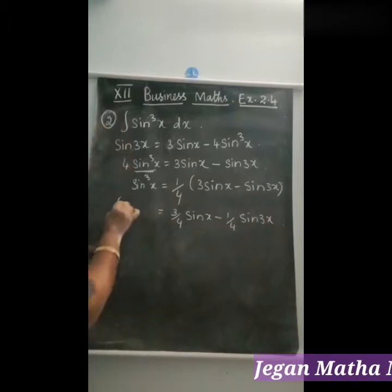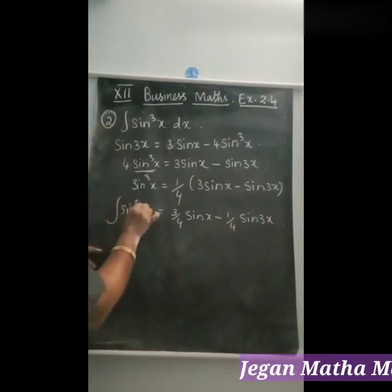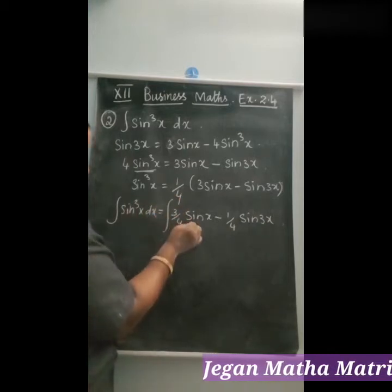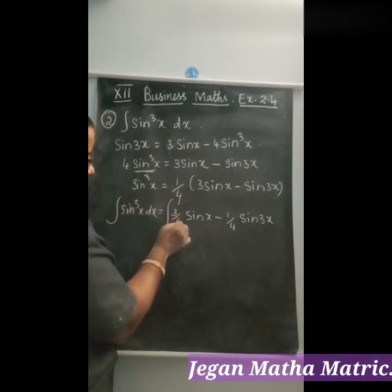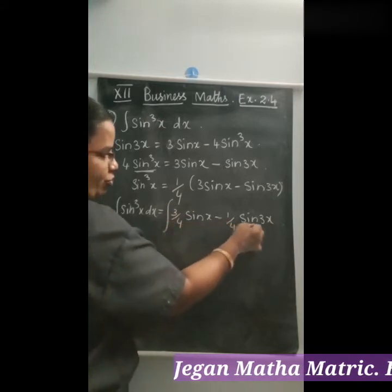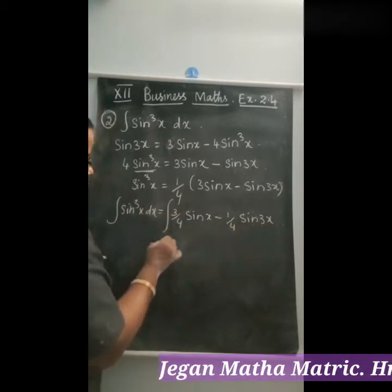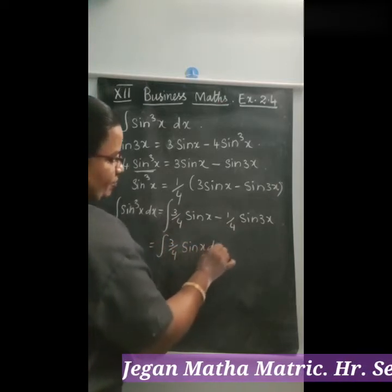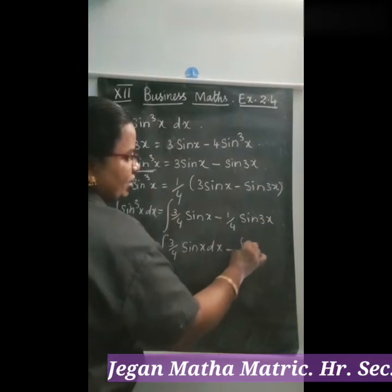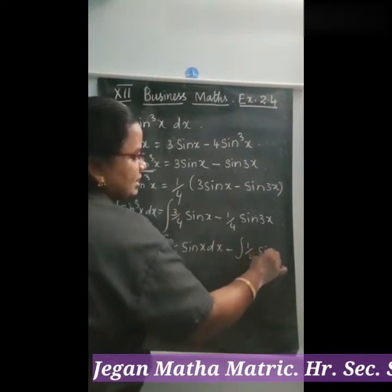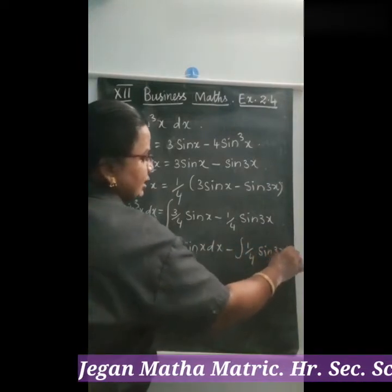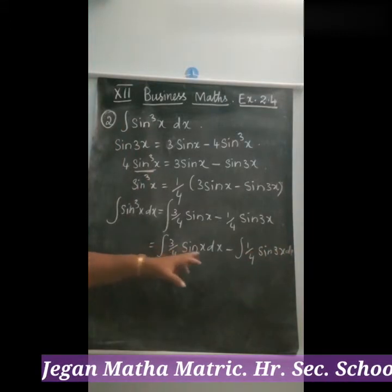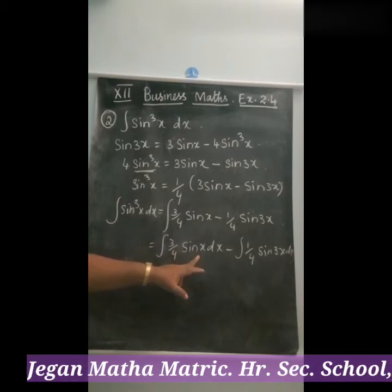To integrate sin³x dx, we substitute this expression. The integral becomes: integral of 3/4 sin x dx minus integral of 1/4 sin 3x dx. Taking the constants outside: 3/4 times integral of sin x dx minus 1/4 times integral of sin 3x dx. The integration formula for sin x is minus cos x.